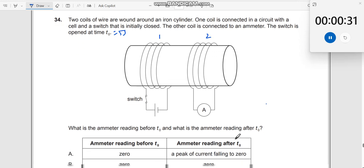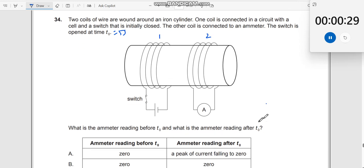What is the ammeter reading before T0 and what is the ammeter reading after T0? Before opening the switch, there is already a current passing through. There is a magnetic field over here. You can have an induced current only when there is a change in the magnetic field.